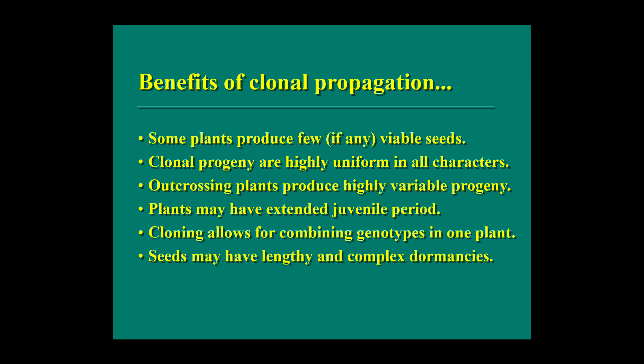Outcrossing progeny is very variable. Plants may also have an extended juvenile period. Plant cloning allows for combining genotypes in one plant. Additionally, seeds may have lengthy and complex dormancies — they can remain dormant for a long time and don't grow easily. For these reasons, we opt for clonal propagation over sexual reproduction.